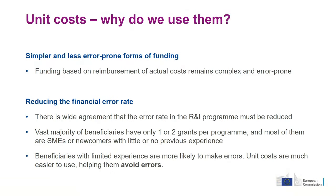First of all, let's start with a very basic question: unit costs — why do we even use them? Just as Reinhard mentioned, reimbursement based on actual cost is complex and prone to errors, and there is a wide agreement that we have to reduce the financial error rate in the research and innovation program. Adding the factor that most beneficiaries are usually SMEs or newcomers with little or no previous experience working with actual costs, in the end these beneficiaries will make errors. Unit costs are much easier to use, which will help you avoid such financial errors.